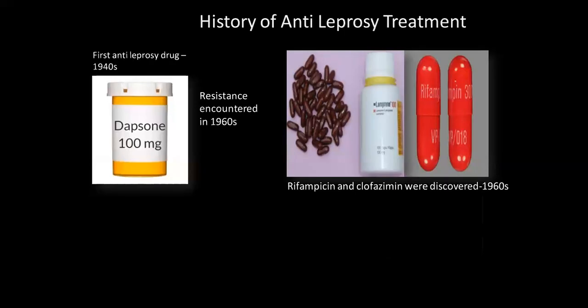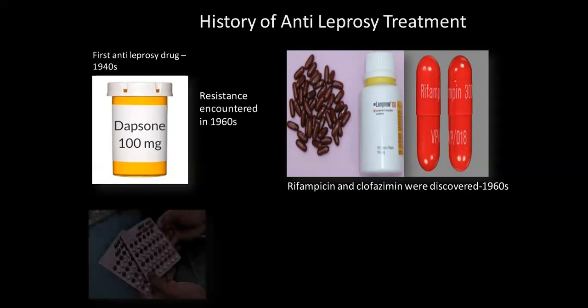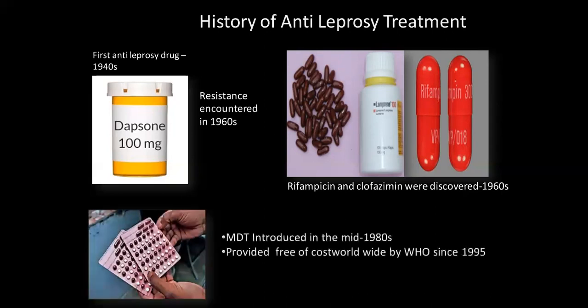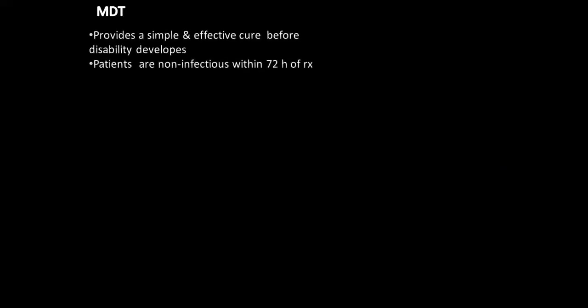Treatment: the first anti-leprosy drug in the 1940s provided good results for 20 years, then resistance to monotherapy developed, and rifampicin and clofazimine were discovered. Now multi-drug therapy is given. This is the first-line treatment, followed by a second-line treatment as well, provided free of cost by WHO. It is simple and prevents disabilities from developing. Patients are non-infectious within 72 hours of treatment.